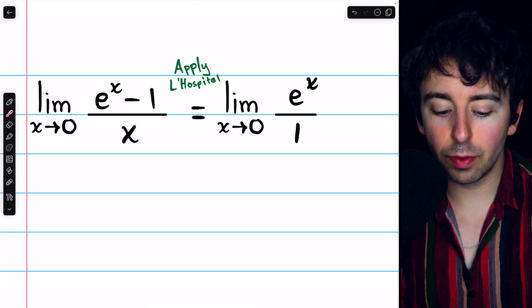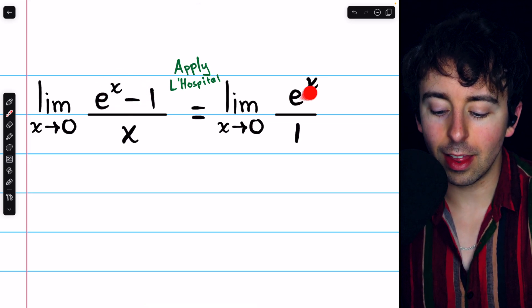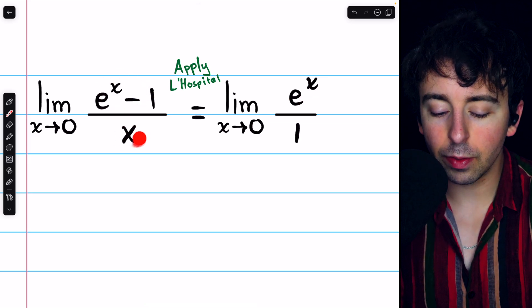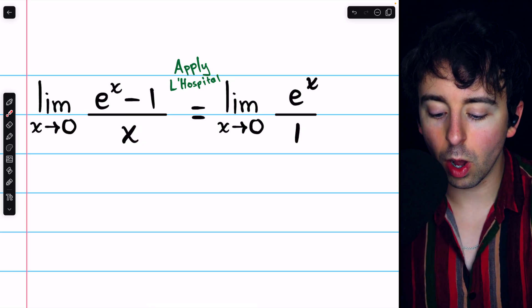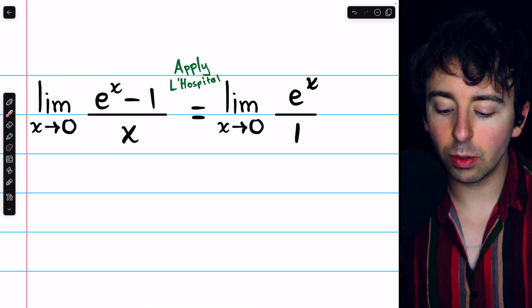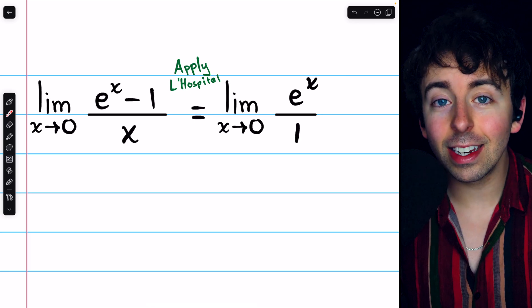So we take the derivative of the numerator, which is just e to the x, and we take the derivative of the denominator, which is just one. So this limit must equal this one if it exists, and indeed it does.